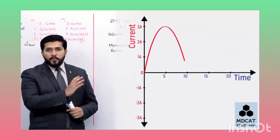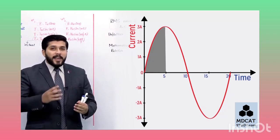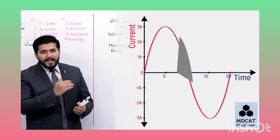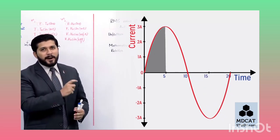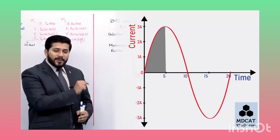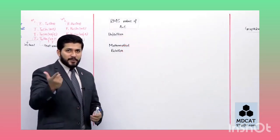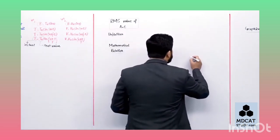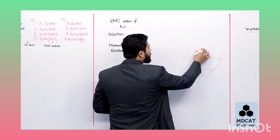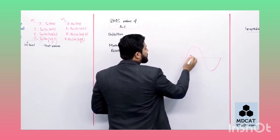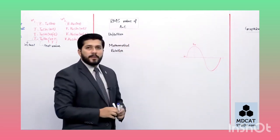ایک اور important بات: پورے cycle کا صرف quarter حصہ دیکھتے ہیں جہاں current zero سے start ہو کر maximum i₀ تک جاتا ہے - باقی cycle اسی کی symmetrical repetition ہے۔ Average لینے سے پہلے، values of current کو directly add کرنے کی بجائے پہلے ان کا square لے لیتے ہیں تاکہ negative values کا square positive ہو جائے اور cancel نہ ہو۔ تو zero سے i₀ تک squares لیتے ہیں۔